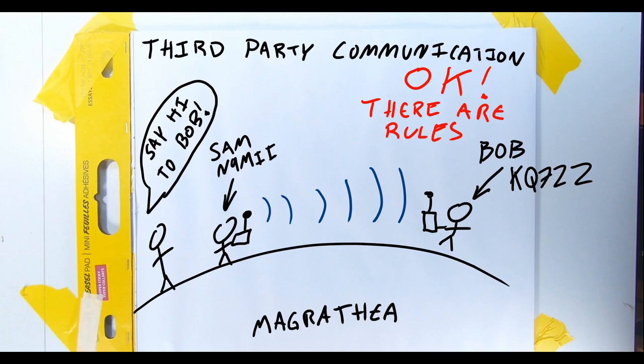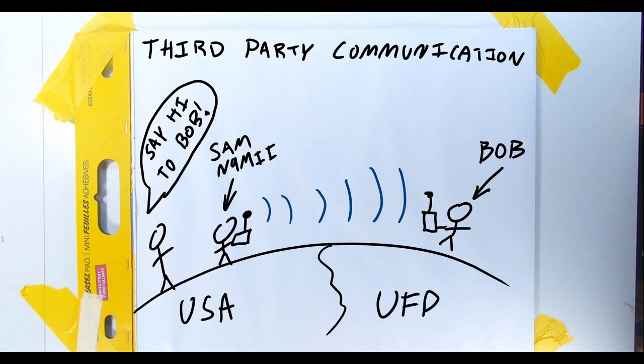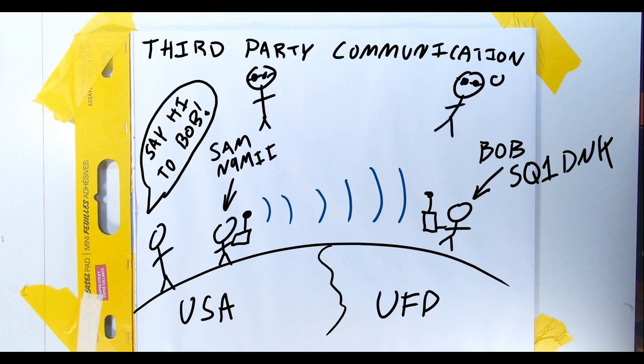Most importantly, and specifically for your test, if Bob is actually in a different country, let's say with the call Sierra Quebec 1 Delta November Kilo, the other country needs to have a third-party agreement with the United States in order to pass third-party traffic. If there's no agreement, we can't say hi to Bob. Sad, really.